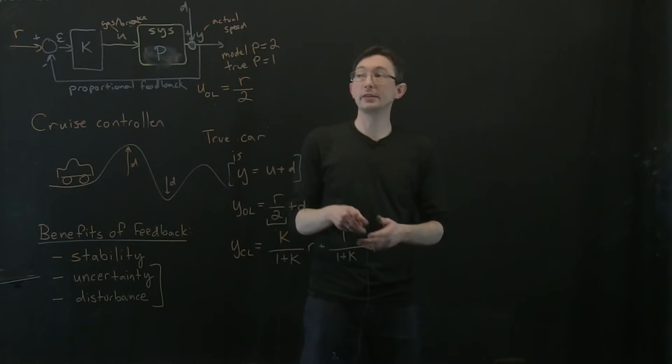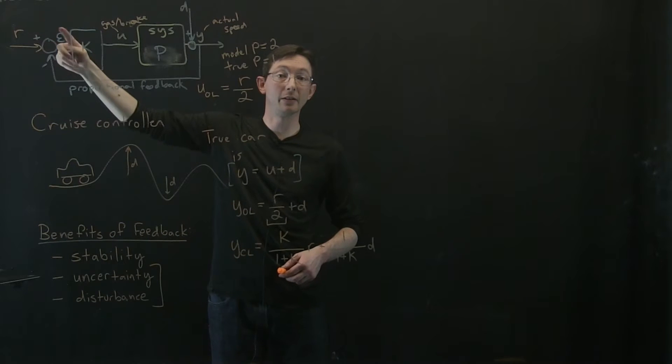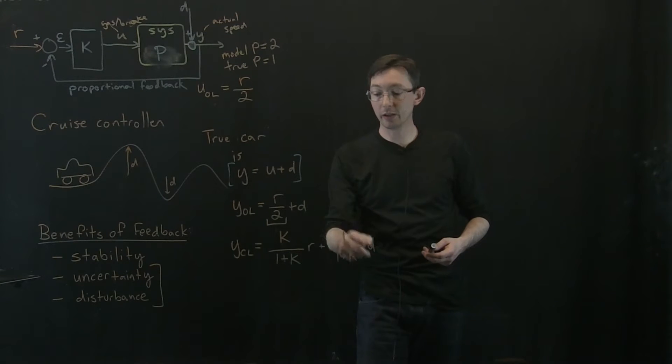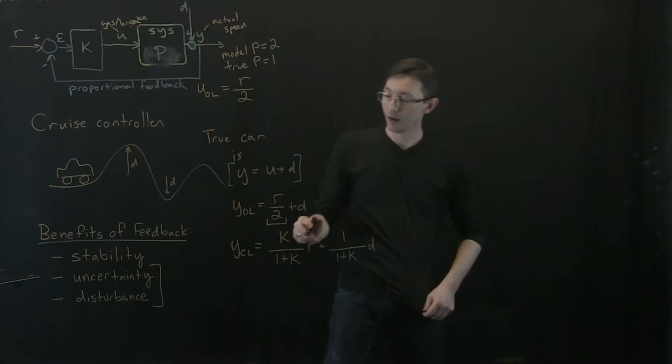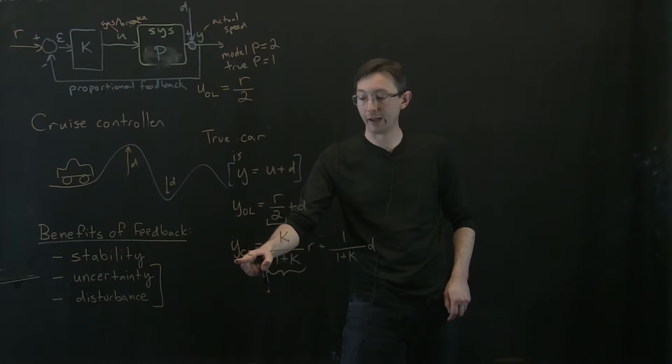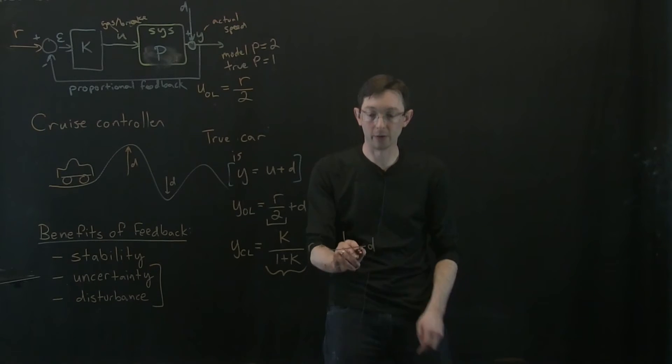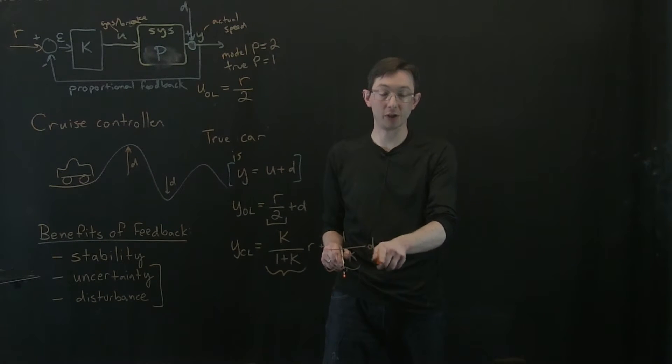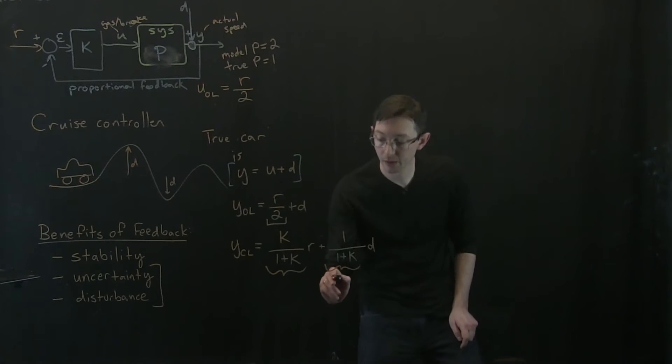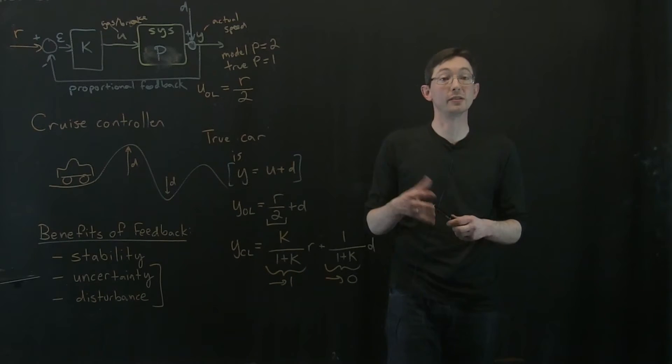But if you close the loop, if you measure the speed and you apply proportional control to the error between your reference speed and your actual speed, then you can get really good properties of your closed loop system. So by choosing k large, I can make my closed loop y very close to my desired reference speed r and I can also attenuate or reject my disturbances by making 1 over 1 plus k really, really small. So we're going to make this as small as possible and this as close to 1 as possible by choosing k large.